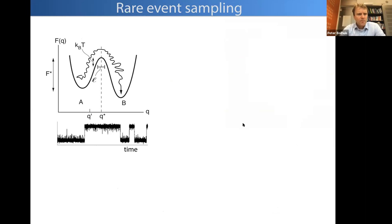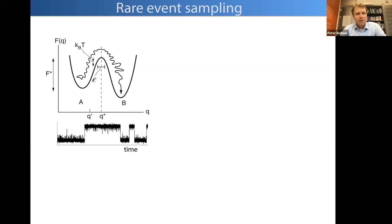There are large barriers between states. In a free energy landscape with collective variable q on the x-axis and free energy on the y-axis, there is a stable state A, a stable state B, and a transition state in between. Trajectories can linger in A for a while and then undergo transitions to B. In a time series, this looks like a long period in A, a sudden jump to B, and back again — this is known as a rare event.